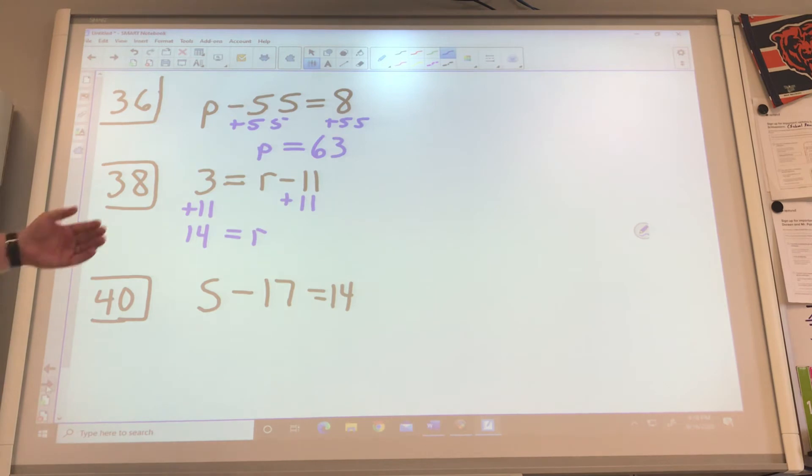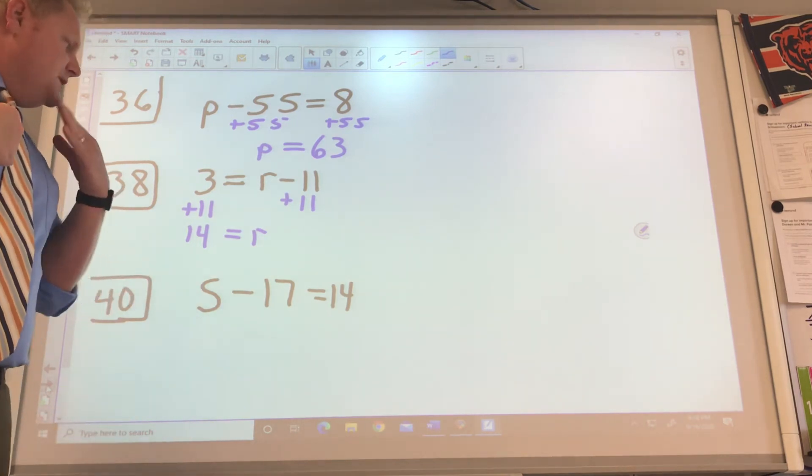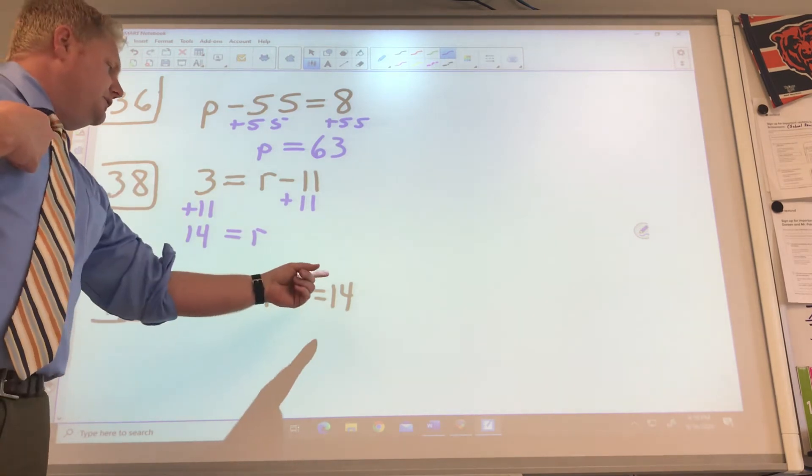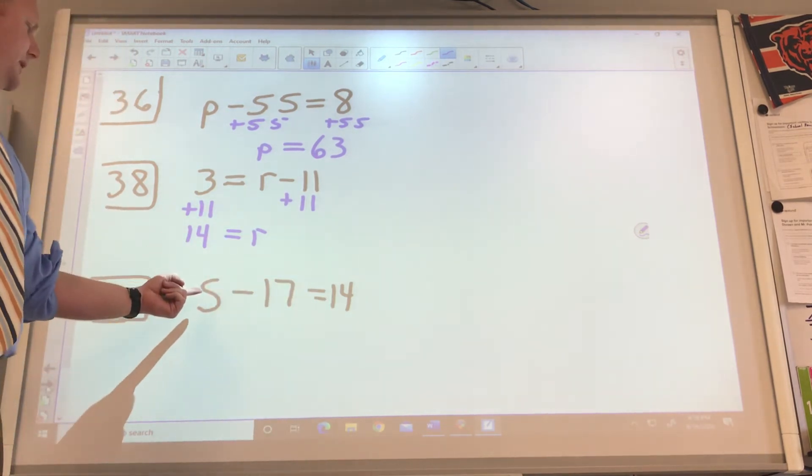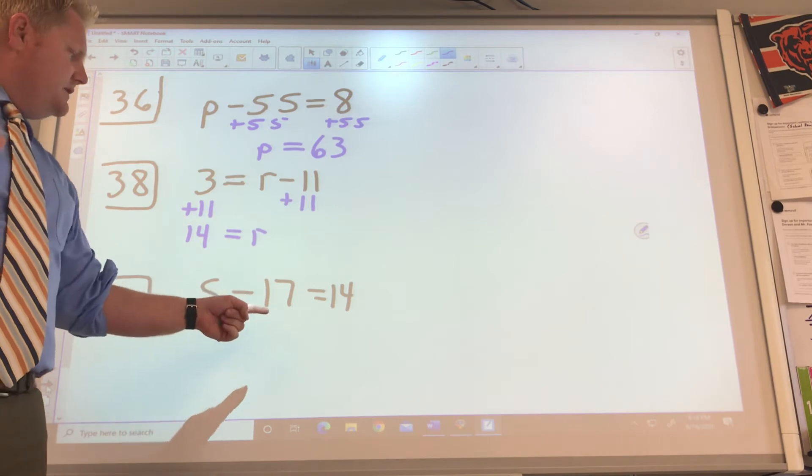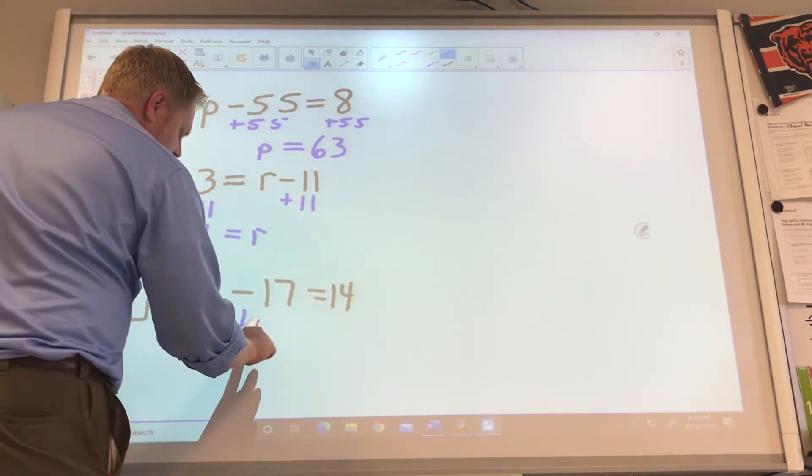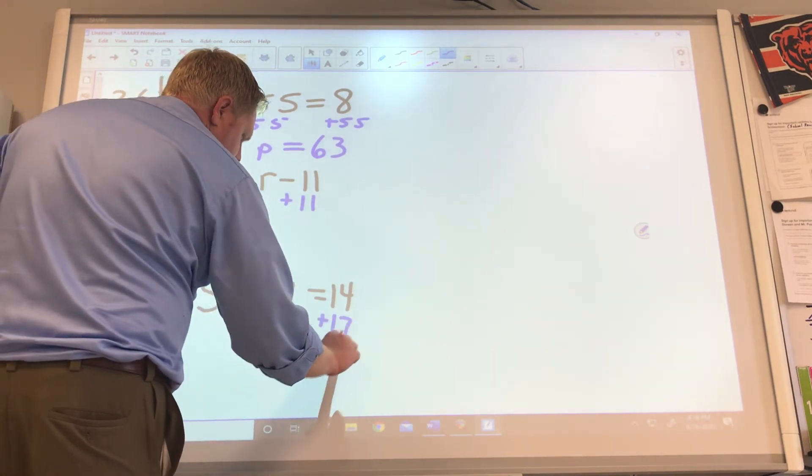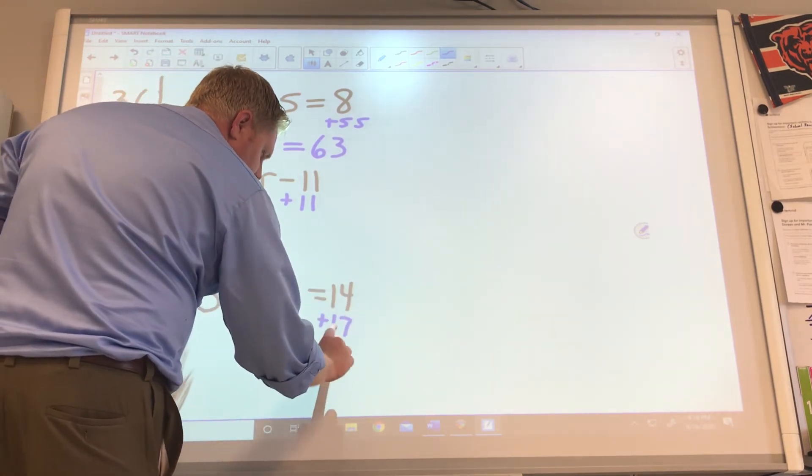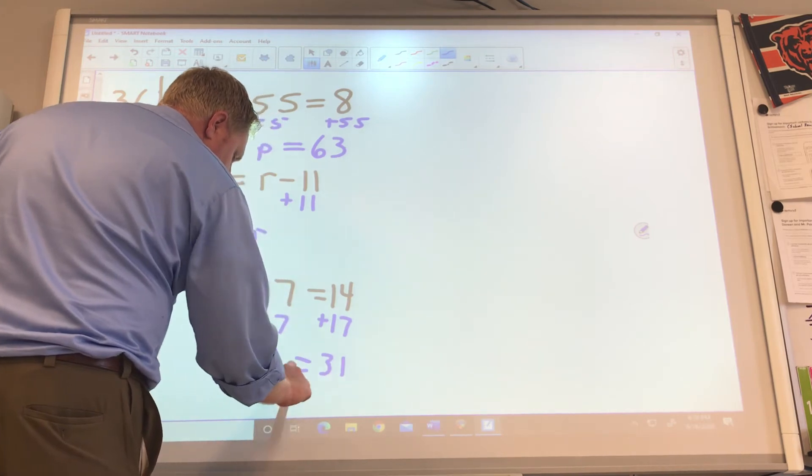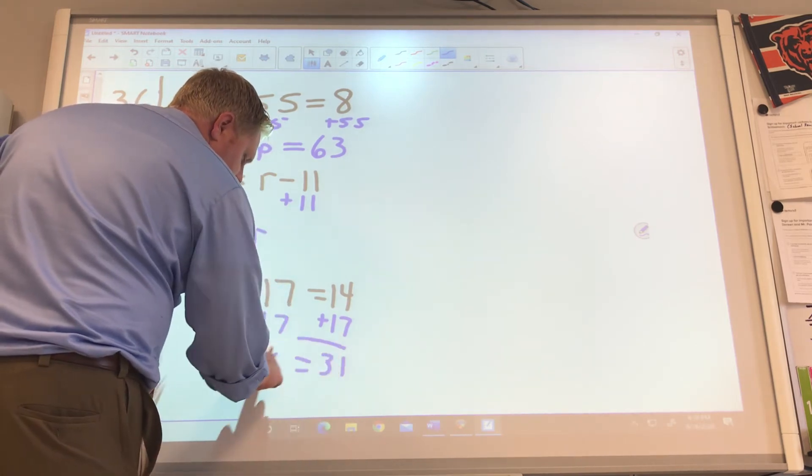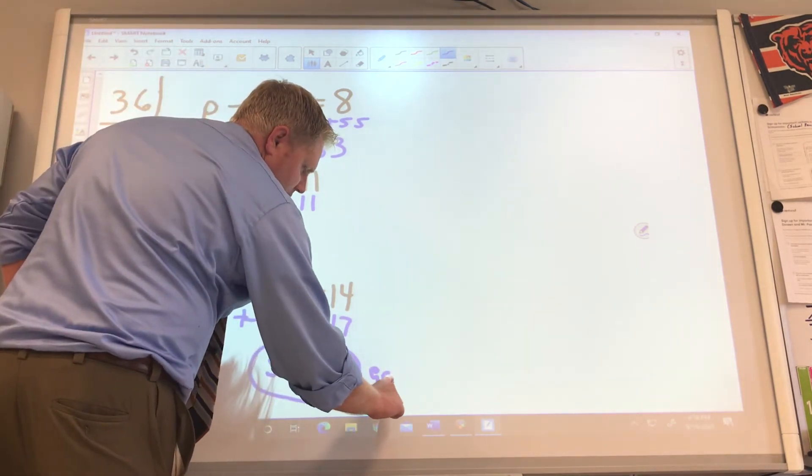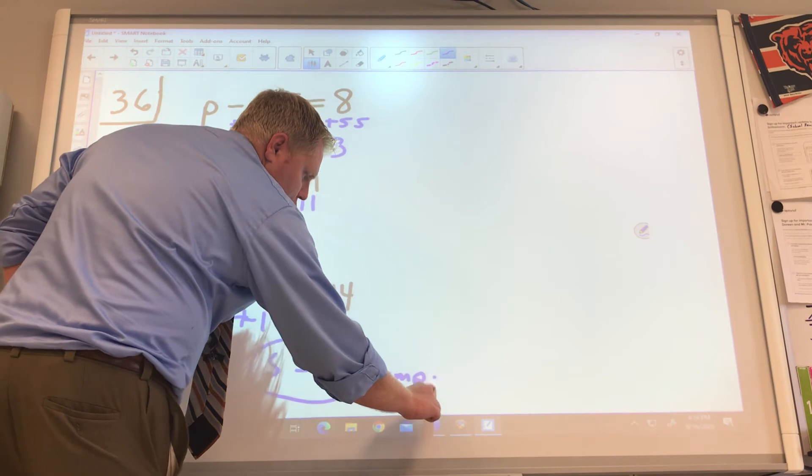S minus 17 equals 14. This was from the Summer Olympic has 17 more games than the Winter Olympic. Well, how many games does the Summer Olympics have if the Winter Olympics have 14? So Summer Olympics, that's the S, minus 17 equals 14. So we're going to add 17 games to the Winter Olympics. That would be 131 games for the Summer Olympics. And it told us the Summer Olympics had more. So that would be a good answer. You may want to write games here just for grins.